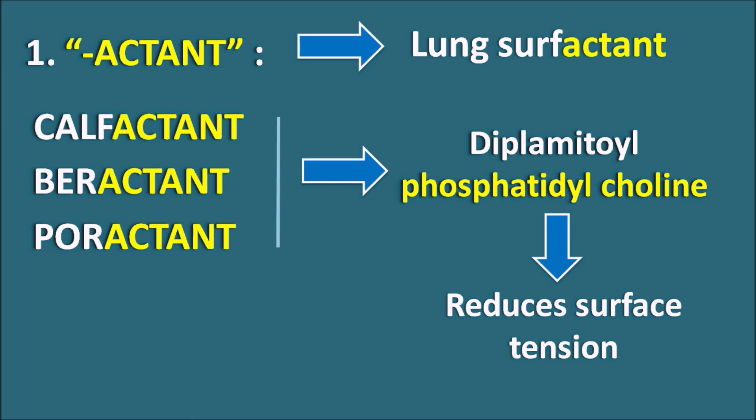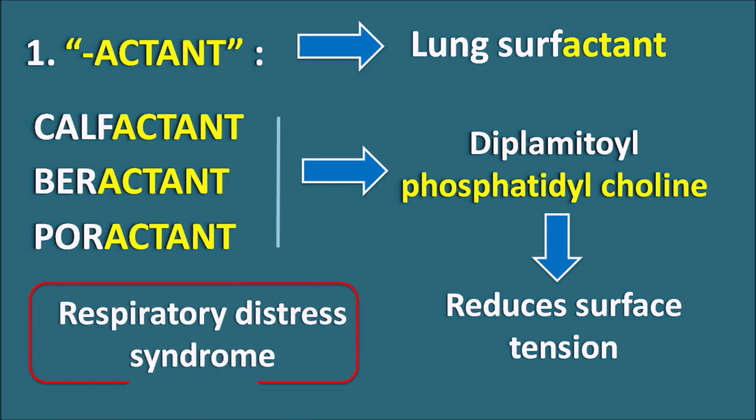Reducing surface tension is required for the filling as well as emptying of air within the alveolar cells, so lung surfactant is required for normal function of the bronchioles. But in newborns we can observe respiratory distress syndrome, where there is a deficiency of lung surfactants because the lungs of the newborn are not completely developed. In such situations we have to give lung surfactants externally, which are the drugs ending with the suffix -actant.